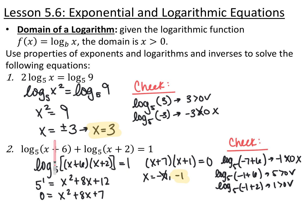When checking my solutions, I plug into both logarithms. For negative 7: negative 7 plus 6 is negative 1 inside, which does not work, so I don't even need to check the second one. For negative 1: negative 1 plus 6 is 5, which is greater than zero, and negative 1 plus 2 is 1, which is also greater than zero. So the only answer is x equals negative 1.